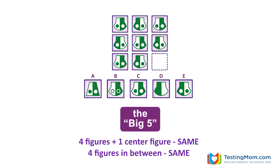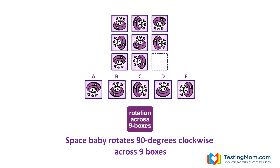Now these can be a little tricky to spot. For instance, this puzzle doesn't look anything like the big five puzzle you just saw. But if you look at it closely, you'll see that the figures in the four corners and center are the same, and the figures in between are also the same. If you can recognize puzzles that follow this rule, it's super easy to find the answer — look for a figure that's the same as one in the corner. Here C is the answer.